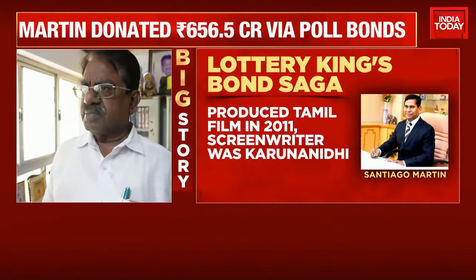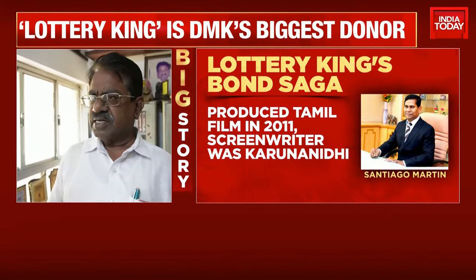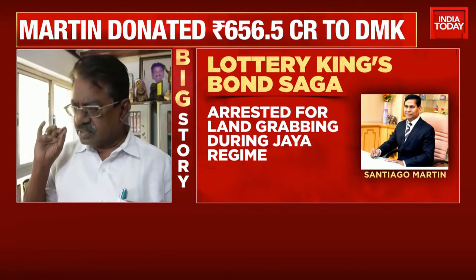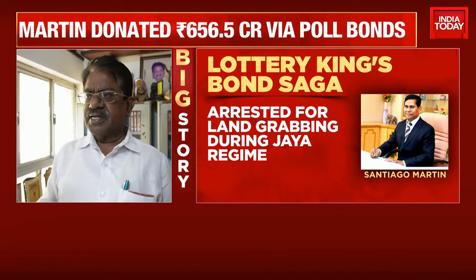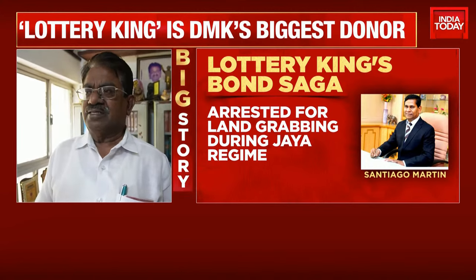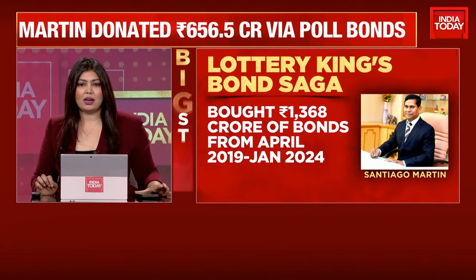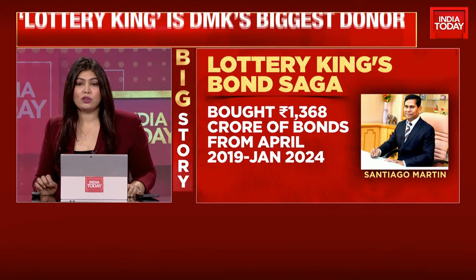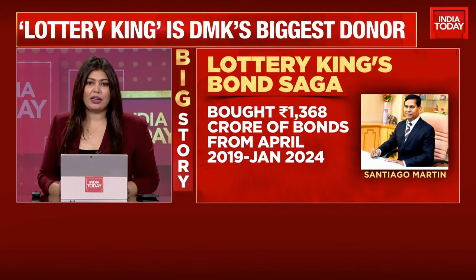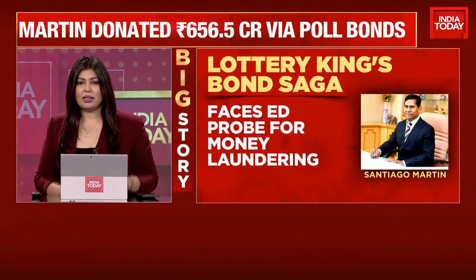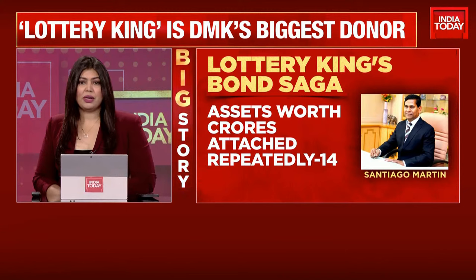When the DMK received money from the lottery market, with electoral bonds available everybody will come and make use of it and give to the parties. But the specific charge is that some parties threatened certain people, sent ED and income tax authorities for raids, and after getting those bonds, stopped proceedings — effectively pressurizing people to give them money. Santiago Martin has bought roughly 1,368 crores of electoral bonds from April 2019 to January 2024, accounting for 11% of total bonds purchased. He faces an ED probe for money laundering and assets worth crores of rupees have been attached repeatedly. He also contributed 2 crores to the CPI(M) mouthpiece in 2008.